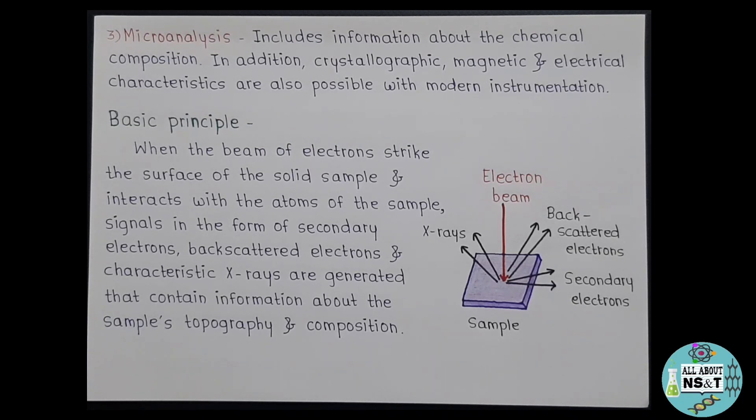Okay then, now let's get into knowing about working principle and instrumentation of SEM. Firstly, let's understand its basic principle. So when the beam of electrons strike the surface of the solid sample and interacts with the atoms of the sample, signals in the form of secondary electrons, backscattered electrons, and characteristic x-rays are generated that contain information about the sample's topography and composition. So as you can see in this picture, when the electron beam hits the sample surface, there is interaction between them which leads to the generation of secondary electrons, backscattered electrons, and x-rays.